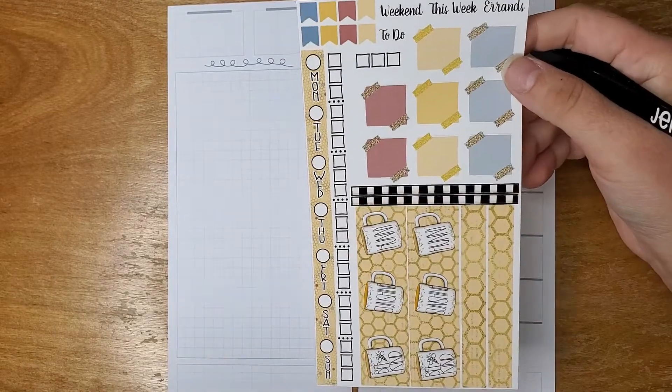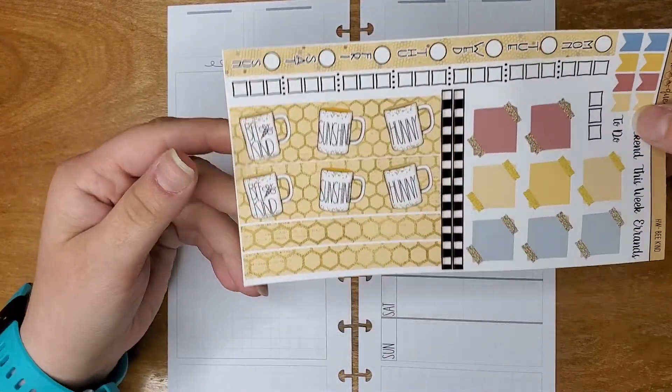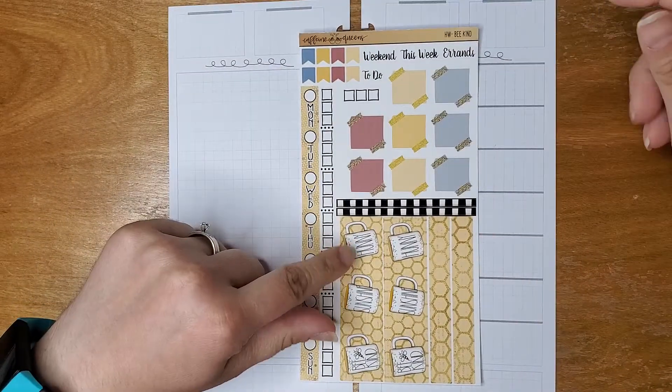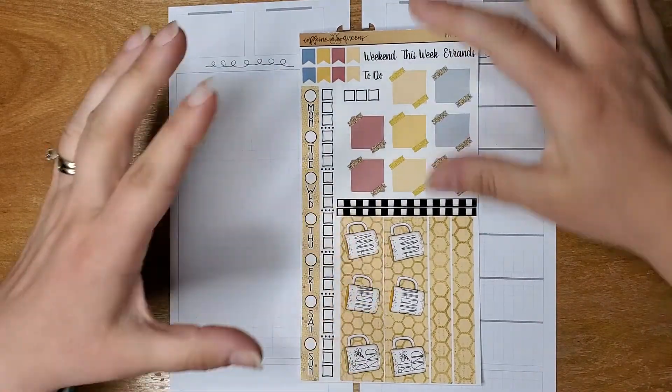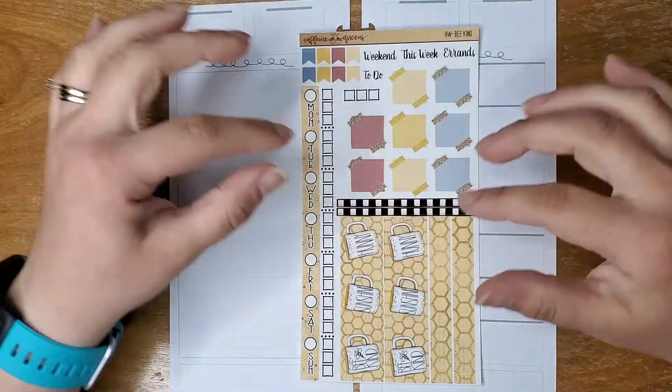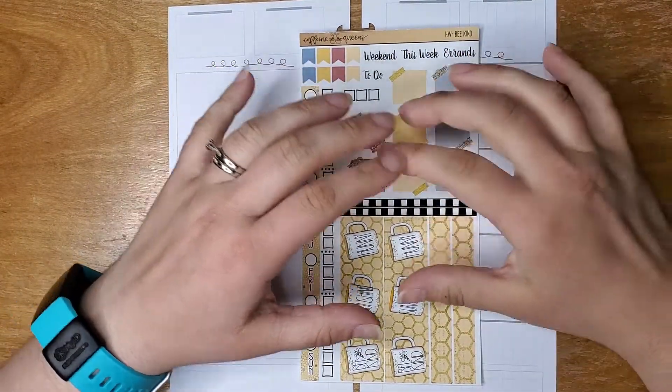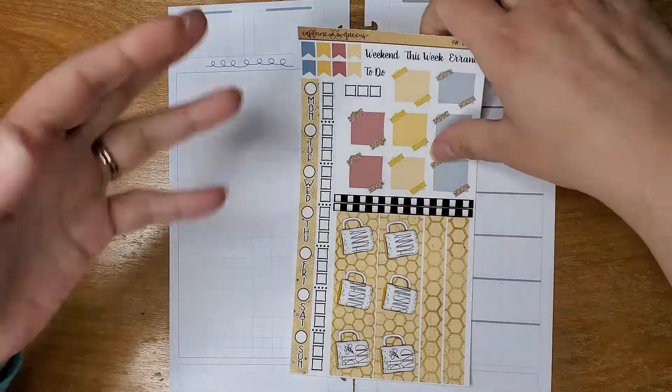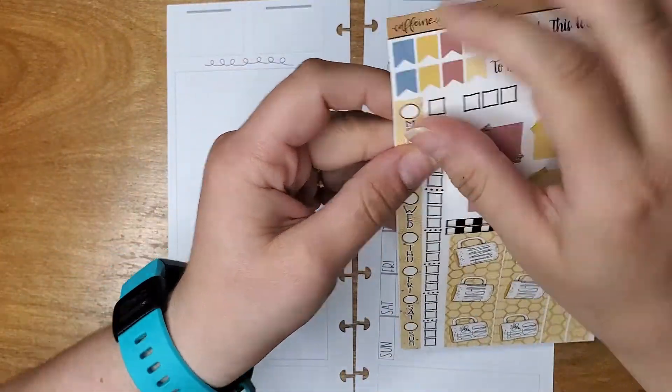We're going to use this kit from Caffeine Queens. It's a really cute bee kit. I only ordered the first sheet. The other sheet has some bigger pieces and such but I won't use them in here so I didn't order those.